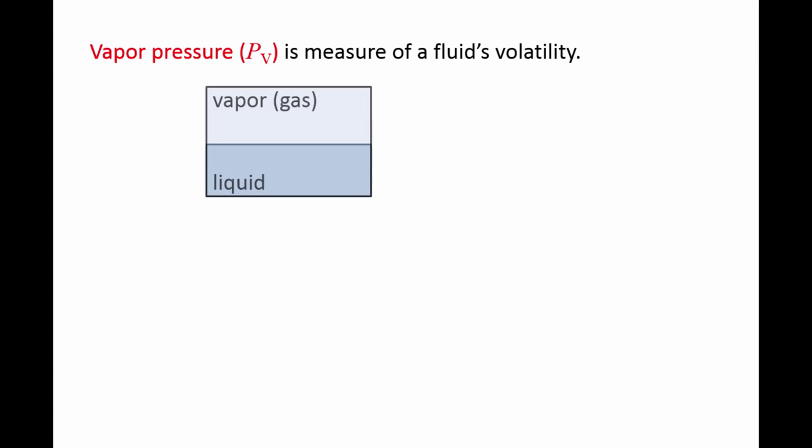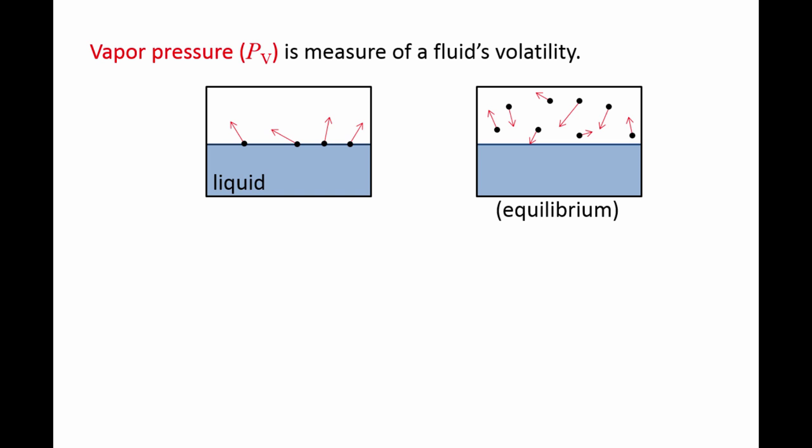Imagine a sealed box that contains a pure liquid-vapor mixture, such as water. Now we remove all of the vapor. At that moment in time, there will be a net flux of molecules evaporating from the surface. Some of these molecules will later return to the liquid, and eventually an equilibrium will be established between the rate molecules evaporate from the liquid surface and the rate molecules return back to the liquid.